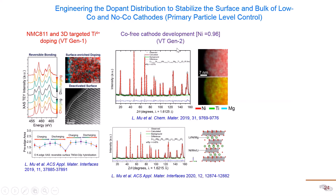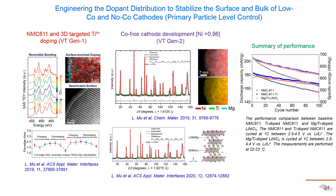We expanded this to cobalt-free cathodes — termed GEM2 at Virginia Tech under a DOE project — tuning the titanium and magnesium distribution. Magnesium is uniformly distributed while titanium is enriched on the surface. We performed synchrotron X-ray diffraction, Rietveld refinement, and neutron scattering refinement to identify the specific lattice sites of these dopants. The summary is that we achieved a cobalt-free, magnesium-titanium-doped cathode with 96% nickel content performing at the same level as conventional NMC. We are still advancing this work to collect more data.